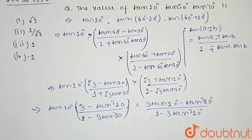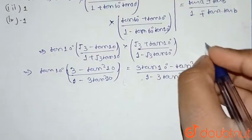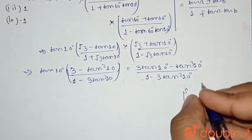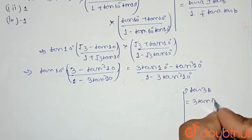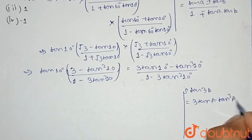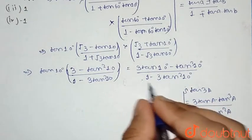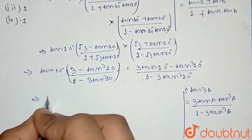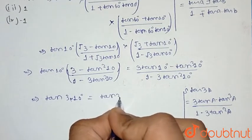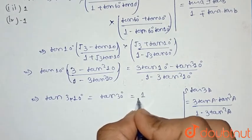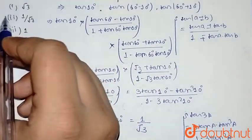We know the formula tan(3a) = (3tana - tan³a) / (1 - 3tan²a). Here a = 10°, so it becomes tan(30°) = 1/√3. This is our answer, so option 2 is correct.